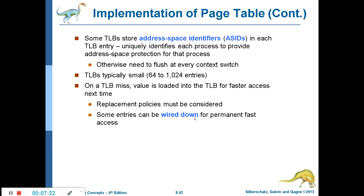Some entries can be wired down for permanent fast access. If a user process is continuously accessing the same page numbers again and again, those can be stored permanently — this is what wired down means. It is similar to cache memory: if you are referring to the same memory locations repeatedly, they are temporarily stored in cache for faster access. This is an analogous concept.